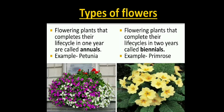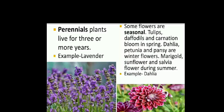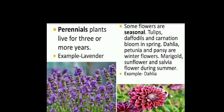Types of flowers. Flowering plants that complete their life cycle in one year are called annuals. Example: primrose. Plants that live for three years or more are called perennials. Example: lavender. Sunflowers are seasonal. Tulips, daffodils and carnation bloom in spring. Dahlia, petunia and pansy are winter flowers. Marigold, sunflower and salvia flower during summer. Example: dahlia.